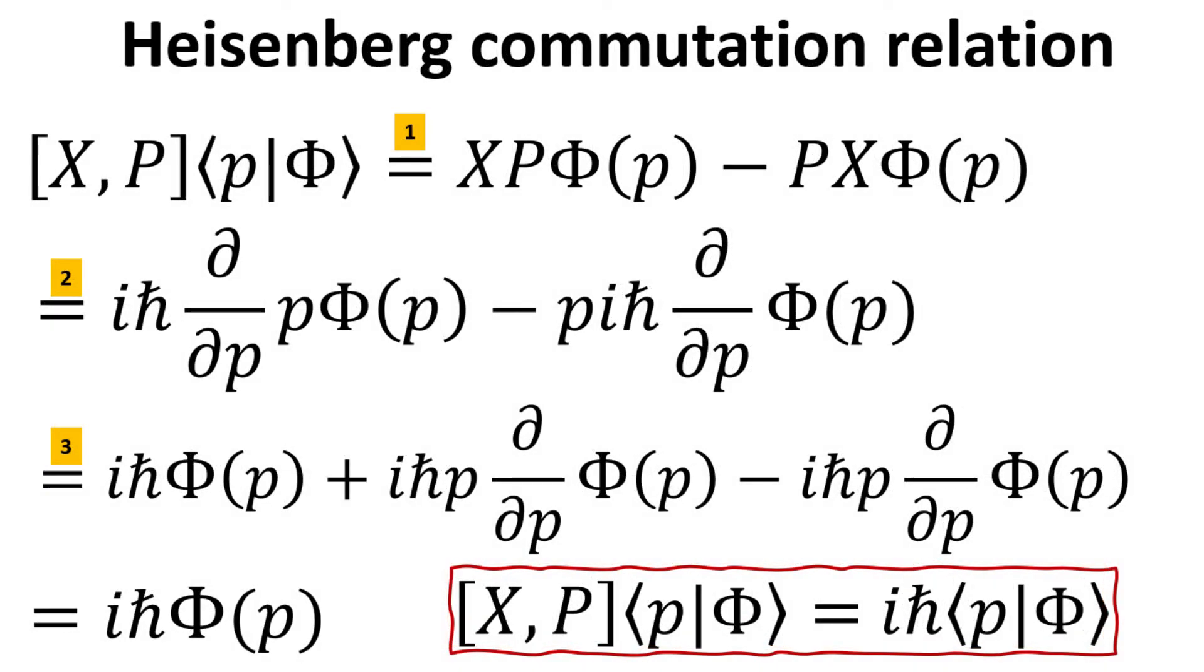Next, we repeat the exercise, but this time acting on the wave function φ in the momentum representation instead. Step 1 is again the definition of commutator. Step 2 expresses the position operator in the momentum representation. Finally, we also arrive at iℏ multiplied by the wave function.